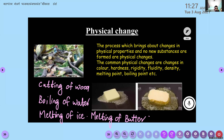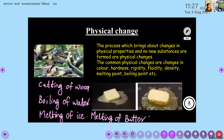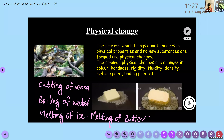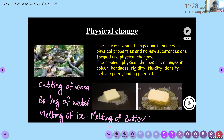Physical change: the process which brings about changes in physical properties and no new substances are formed. The common physical changes are changes in color, hardness, rigidity, fluidity, density, melting point, and boiling point. Examples: cutting of wood, boiling of water, melting of ice.